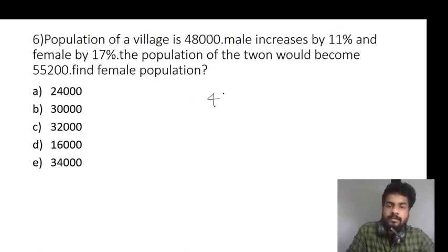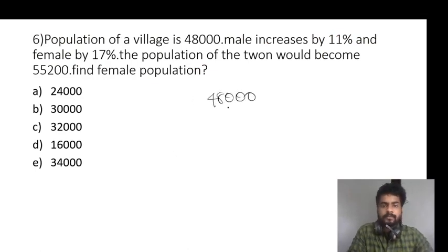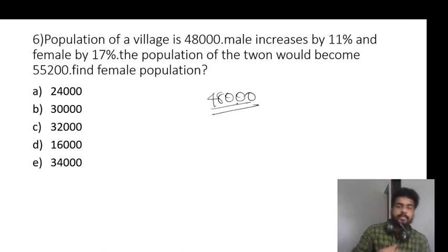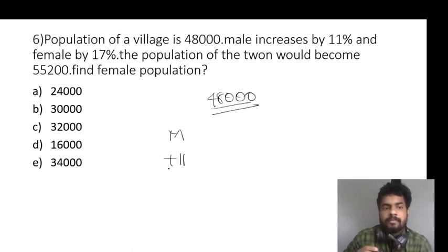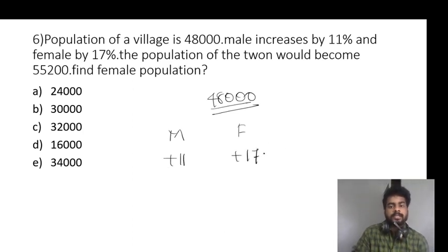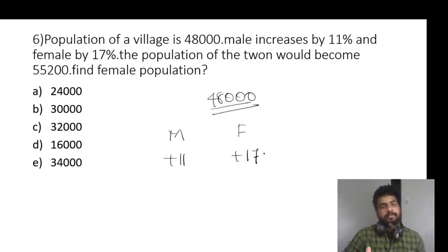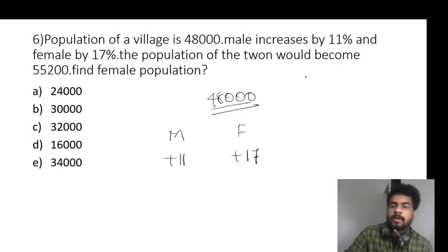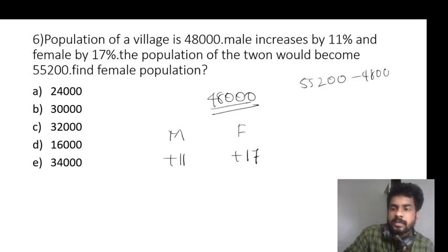Population of a village is 48,000. Male increases by 11 percent and female by 17 percentage. The population of the town would become 55,200. 55,200 minus 48,000 is 7,200.